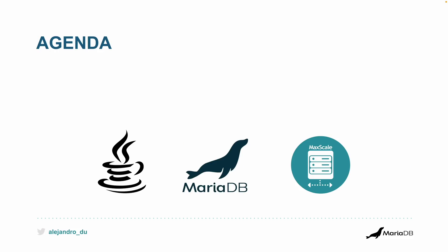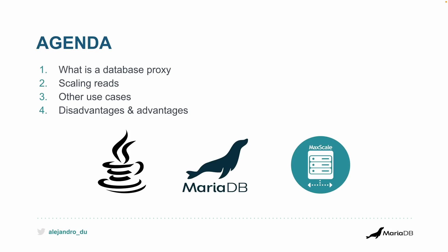We're going to use three things: Java — just a tiny bit, you don't even need to know Java, it's only to show the connection string — MariaDB, and MaxScale. First, we're going to see what a database proxy is, the elements and the architecture. Then we'll see how to scale specifically reads, other use cases, and finally the disadvantages and advantages so you can make an informed decision on whether to use a database proxy or not.